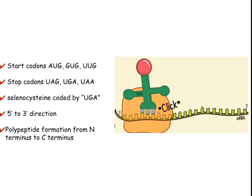As you can see in this slide, the translation machinery is basically made up of four components. The first is the mRNA itself, the second is the ribosome, the third is the tRNA, and the fourth is the amino acid. Based upon these four components, the entire translation process or translation machinery is carried out.